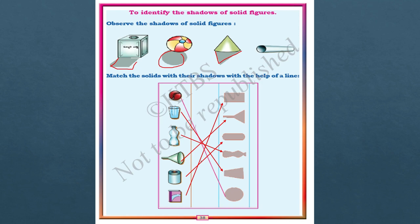Hope you understood about lines, straight lines, and the different shapes — two-dimensional shapes and three-dimensional shapes. This completes lesson one. I am going to see you in lesson two. Till then, take care, revise, and read. Bye-bye.